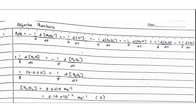Step one: write down the differential rate equation — negative sign for the reactant, positive sign for the product. The relationship is: 1/5 × d[H₂O₂]/dt = 1/8 × d[H₂O]/dt. Since the rate of formation of water is given, substitute: 1/8 × 0.035 = 1/5 × d[H₂O₂]/dt. Rearranging gives 5/8 × 0.035, and we get the answer 0.0219 molar per second.